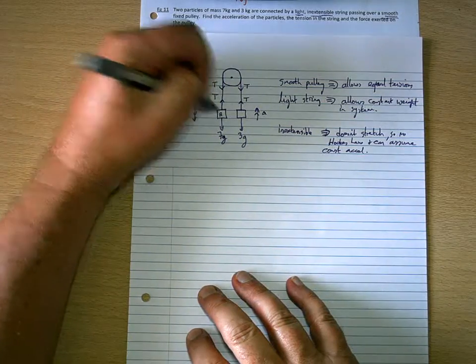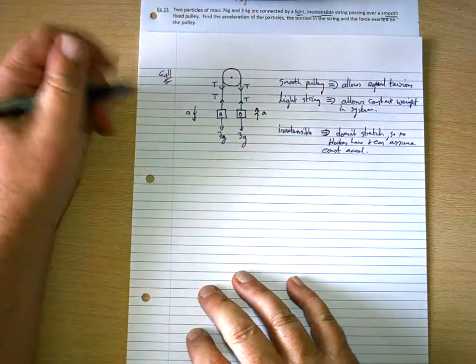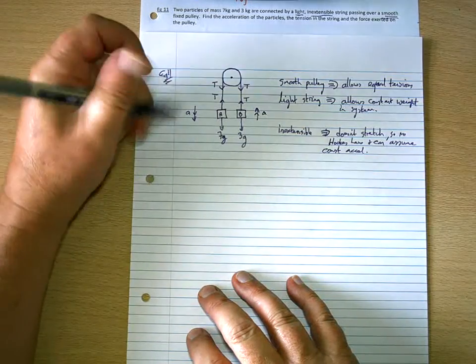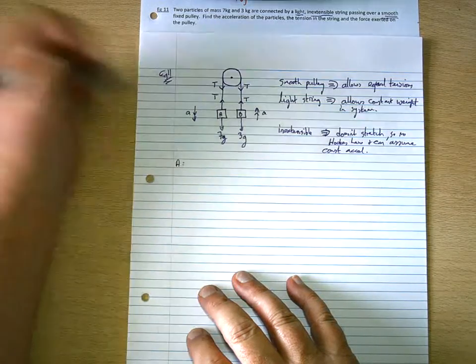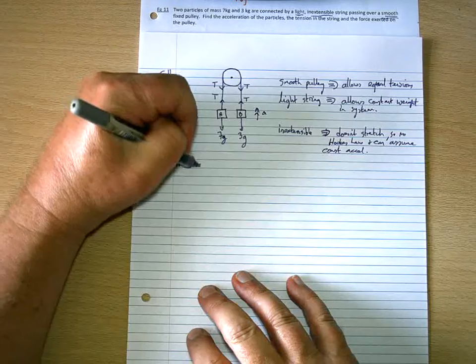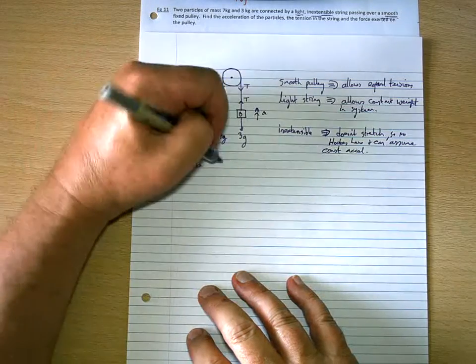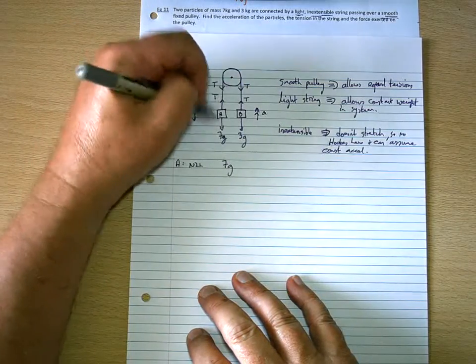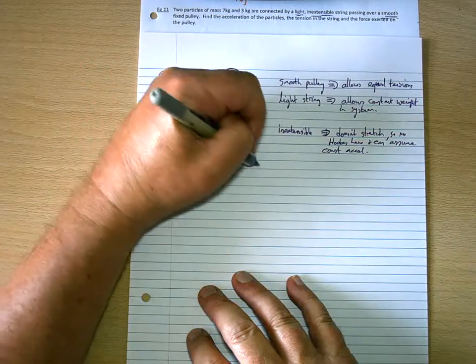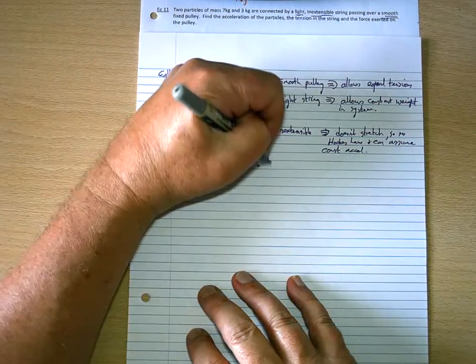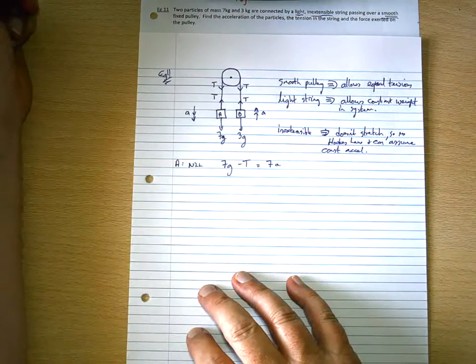So, if I call that A and that B, then working with A, using Newton's Second Law, this direction is positive, so we've got the weight minus the tension equals the mass times the acceleration.